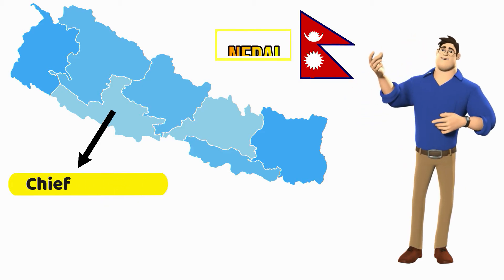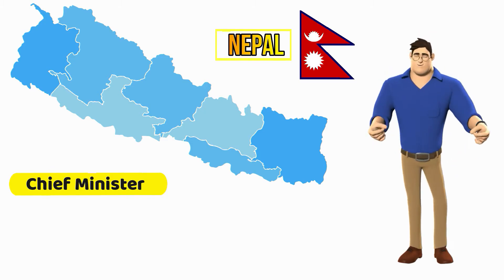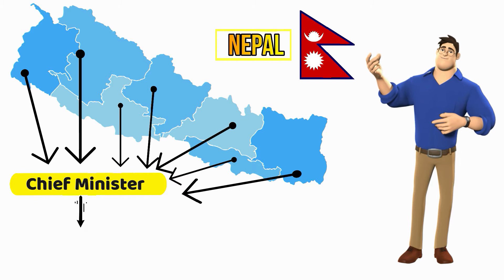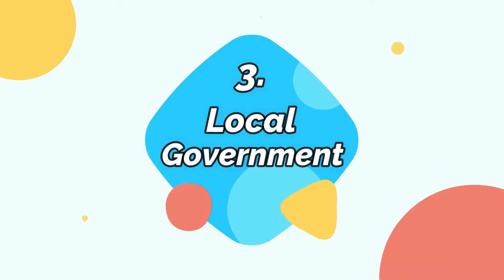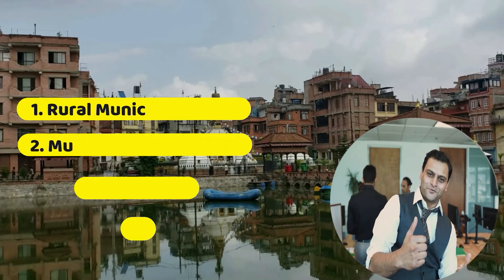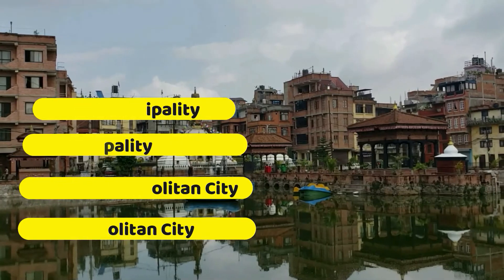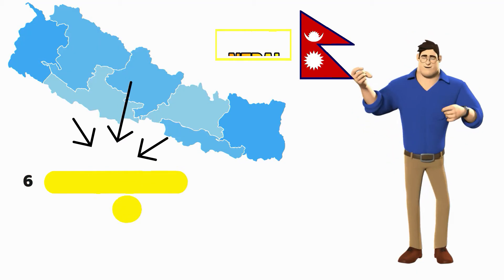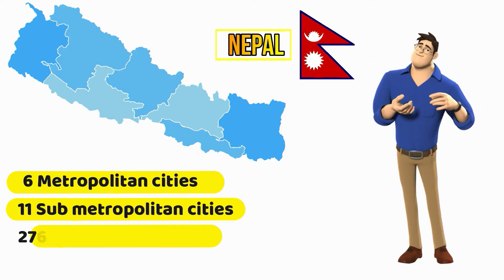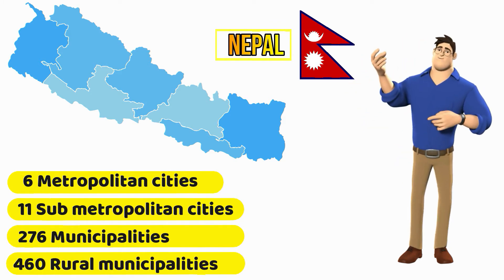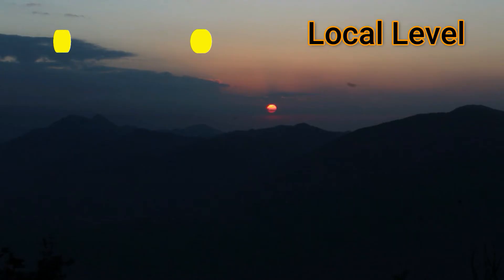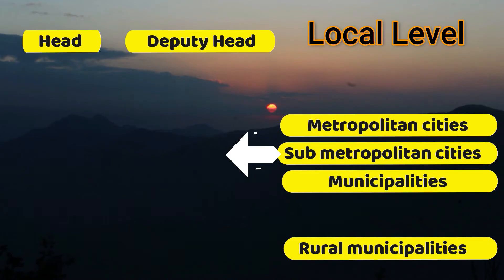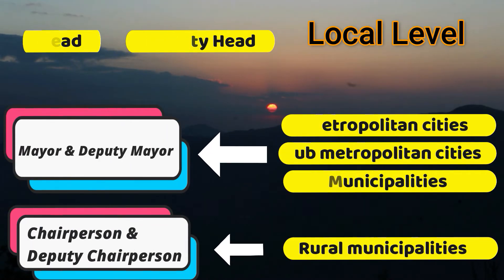The Federal Government is one level. Nagarpalika is promoted by Nagarpalika and Mahanagarpalika. They are promoted by the deputy mayor.